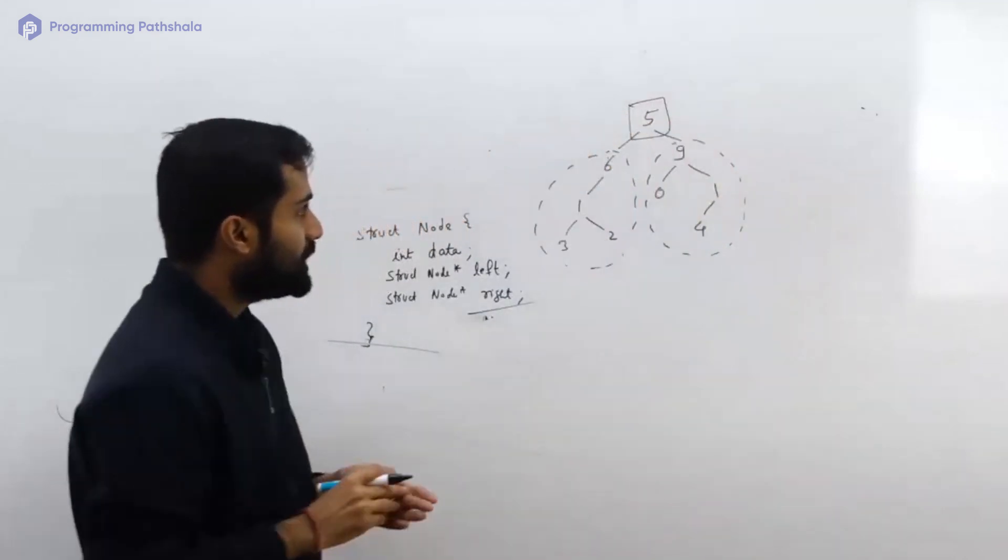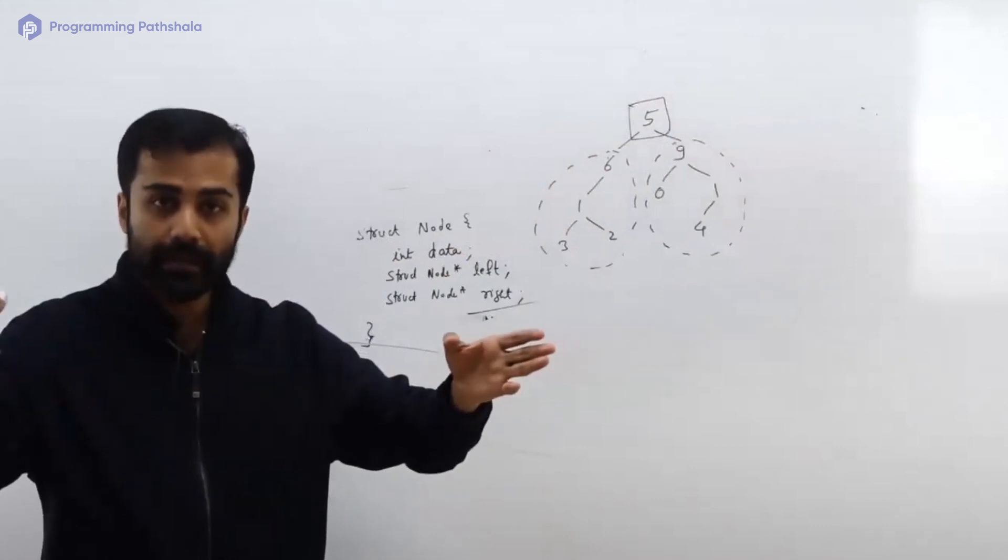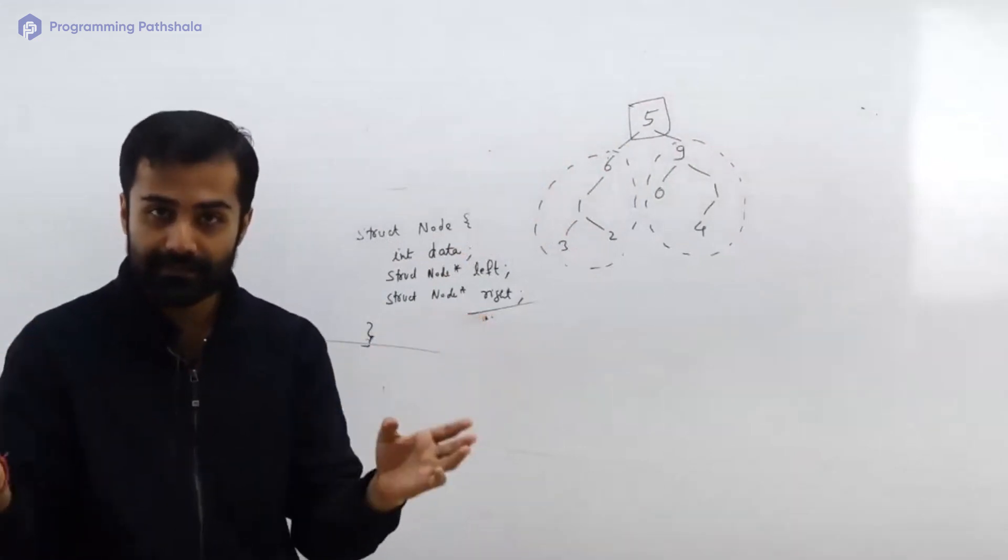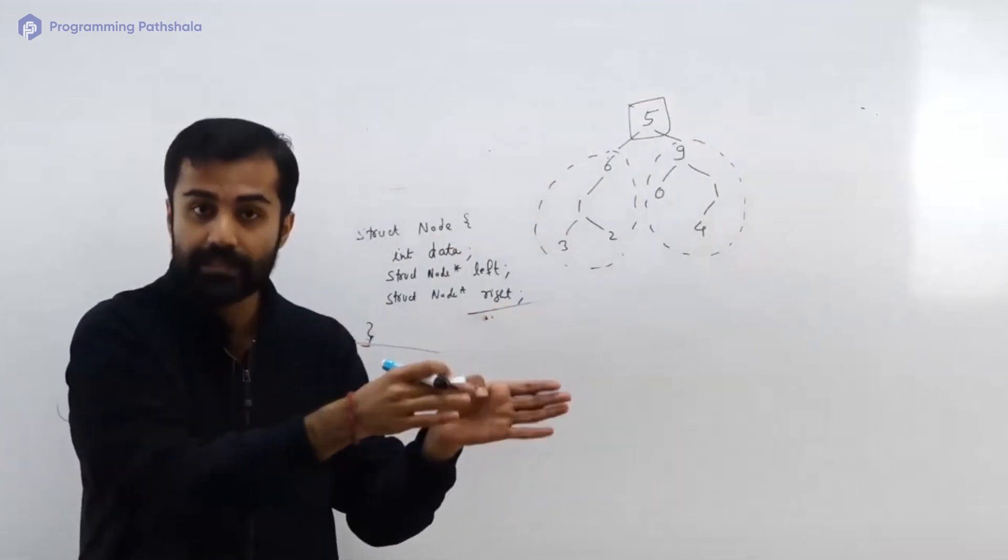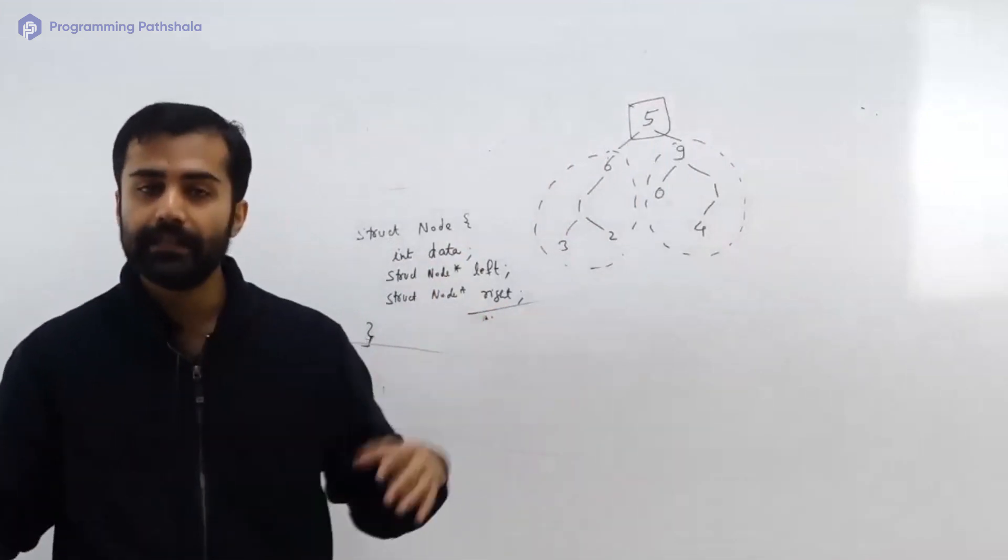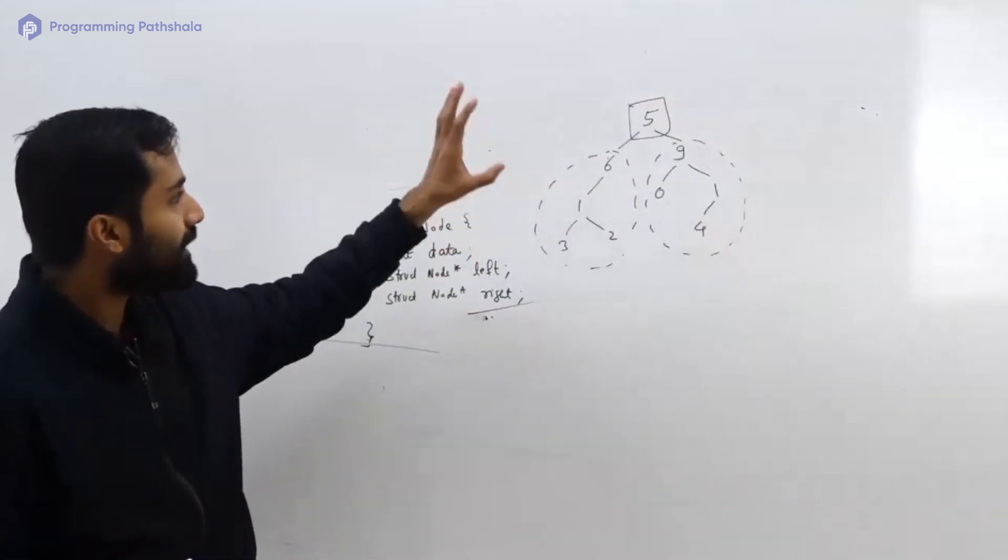You have to think like that. When you think like that, you will be able to come up with some kind of recurrence relation, like how a function is dependent on other functions, and then you will be able to code it.